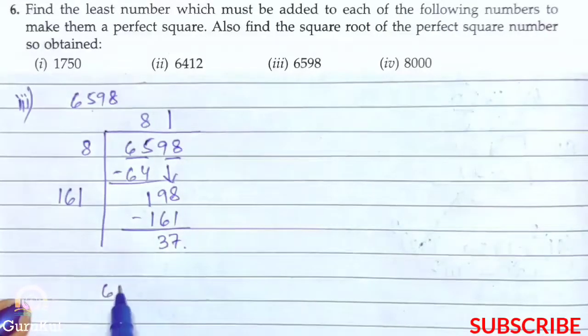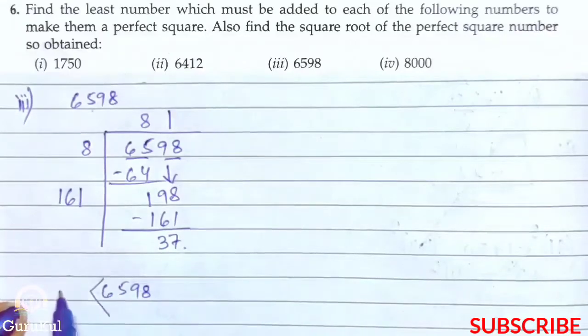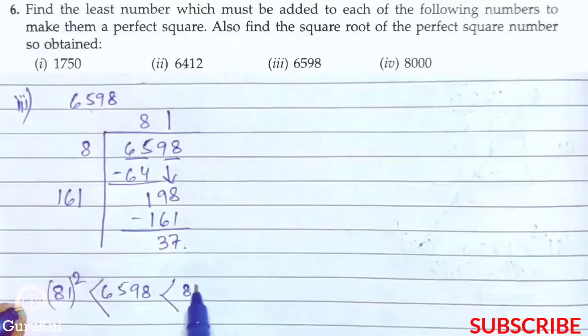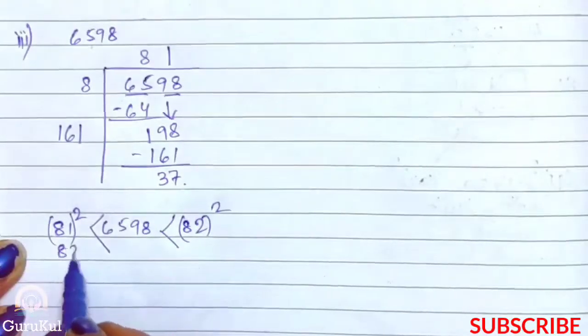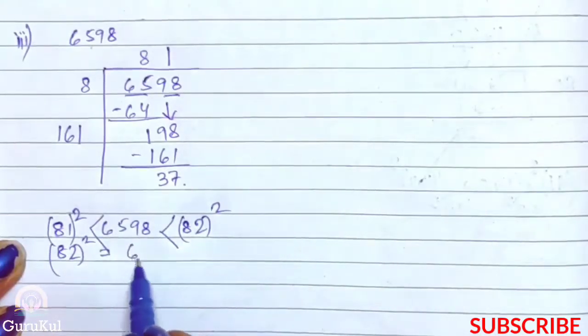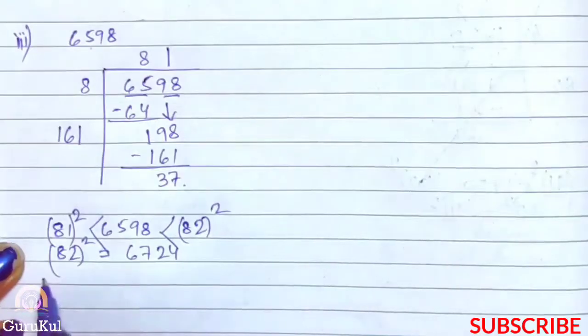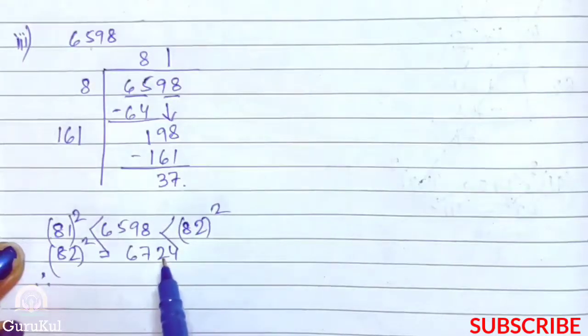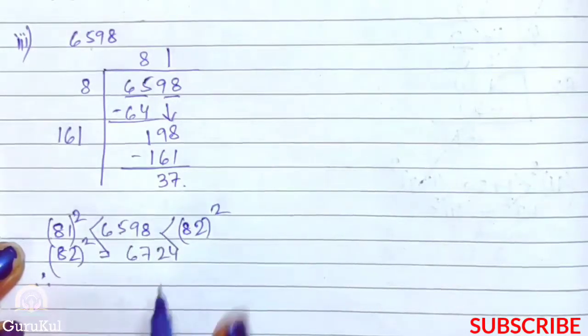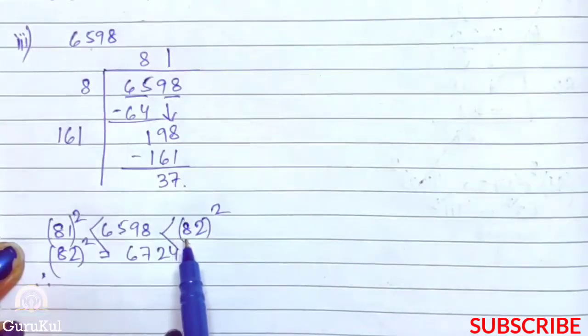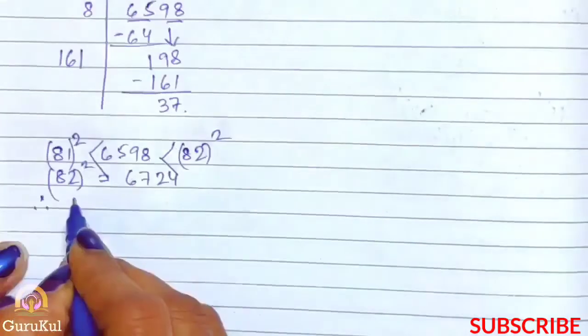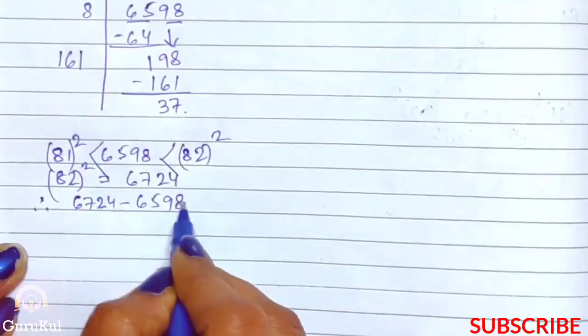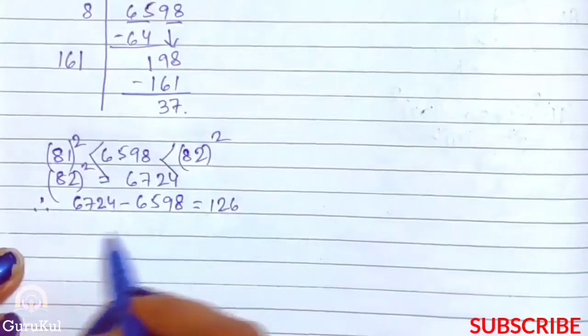To ab kya huwa? 6598 is more than 81 square but it is less than 82 square. So 82 square ka value kya hai? 6724. Hence, in dono ko agar ham loog minus kertate hain, so jho number ae ga wahi number ko 6598 me add karenge, tab woh ek perfect square ho jayega.